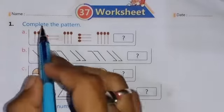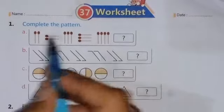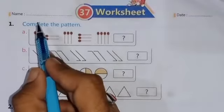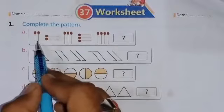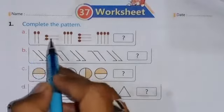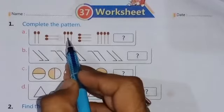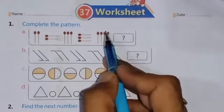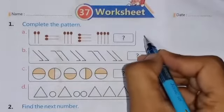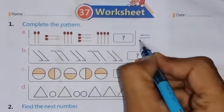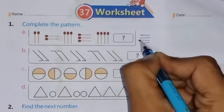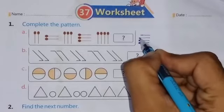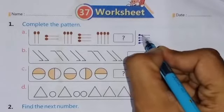The question is complete the pattern. Here you can see matchsticks are given. Two matchsticks upside, left side. Then three matchsticks upside, then left side. Then four matchsticks upside and then left side. So you have to mark four lines and the darkened side left side. This will be the pattern.